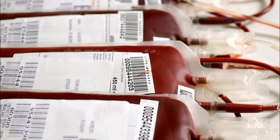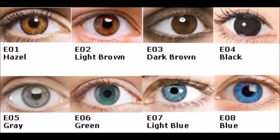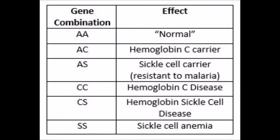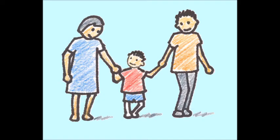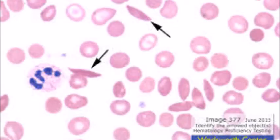Sickle cell conditions are inherited from parents in much the same way as blood type, hair color and texture, eye color, and other physical traits. The types of hemoglobin a person makes in the red blood cells depend upon what hemoglobin genes the person inherits from his or her parents. There are several types of sickle cell disease. The most common are sickle cell anemia (SS) and sickle hemoglobin disease.